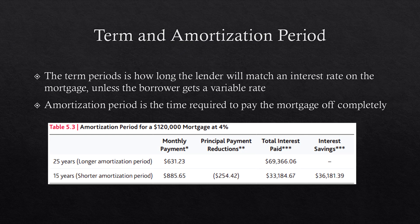It's important to distinguish between the term period and the amortization period. The term period is how long the lender will hold an interest rate on the mortgage — commonly a five-year fixed rate in Canada. The amortization period is the total time required to pay the mortgage off completely, such as 25 years. As shown in the comparison table, choosing a 15-year versus 25-year amortization results in a higher monthly payment but significantly less interest paid over the lifetime of the mortgage.